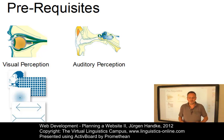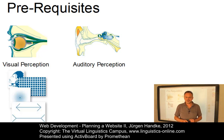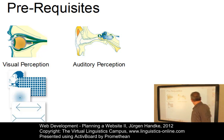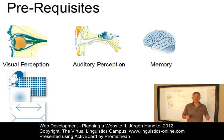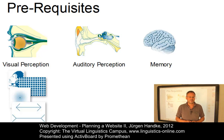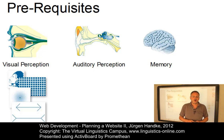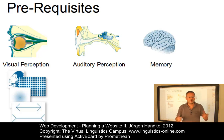Auditory perception becomes important when your site requires a lot of sound. Low compression rates can make spoken passages or music unpleasant. And finally, we have the memory factor. Memory is not a less important factor for web design at all. How often have you found yourself lost in hyperspace because you could not remember where you started browsing? Further e-lectures and virtual sessions on the Virtual Linguistics Campus on human perception and memory will provide you with the details.